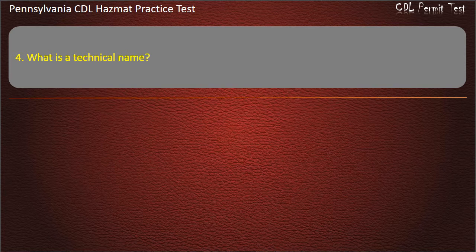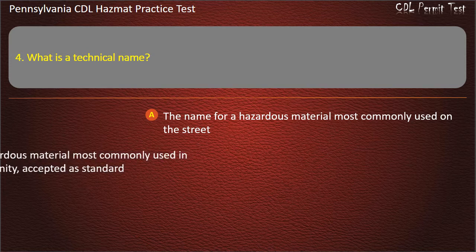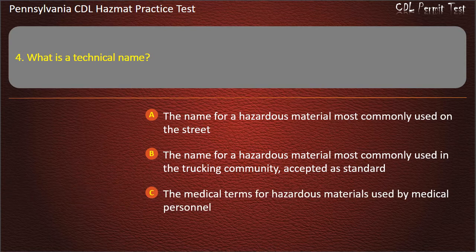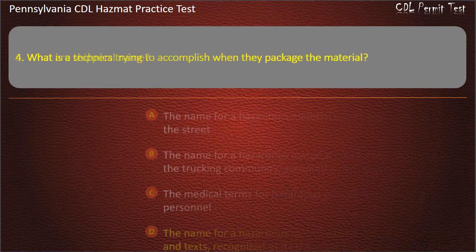Question 4. What is a technical name? Options: The name for a hazardous material most commonly used on the street; The name most commonly used in the trucking community, accepted as standard; The medical terms for hazardous materials used by medical personnel; The name for a hazardous material used in scientific journals and texts, recognized as its chemical and microbiological name. Answer: The name for a hazardous material used in scientific journals and texts, recognized as its chemical and microbiological name.